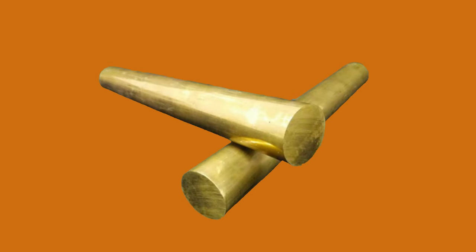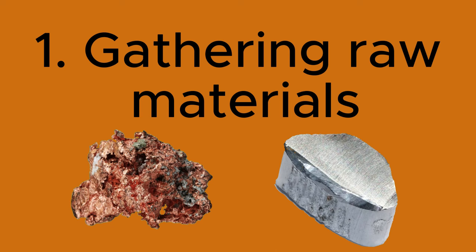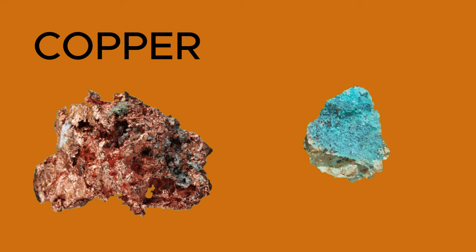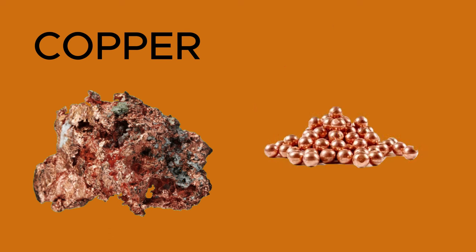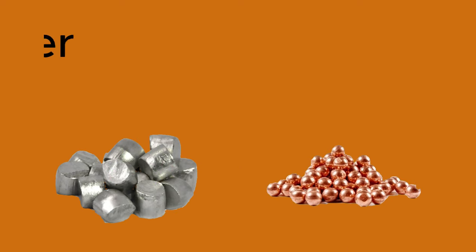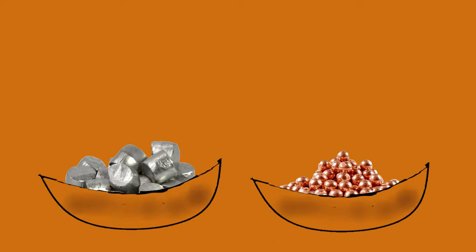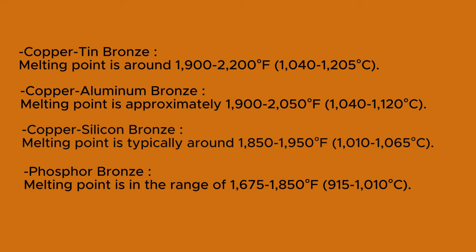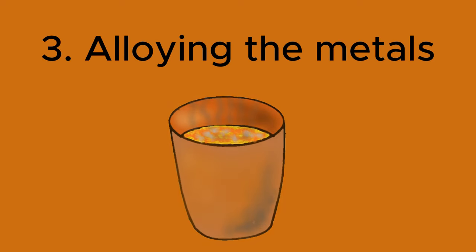Bronze is an alloy made by combining copper and tin in varying proportions. The process of making bronze involves several steps. First, gathering raw materials: high-quality copper ore is mined and refined to obtain pure copper metal, while tin ore is mined and processed to extract pure tin. Second, melting: the pure copper and tin are separately melted in furnaces at high temperatures. The melting point of bronze generally falls within the range of 930 to 1200 degrees Celsius.